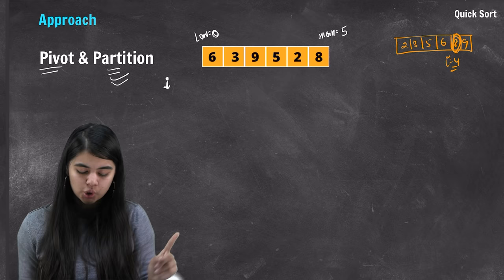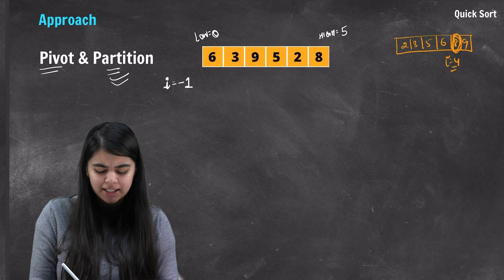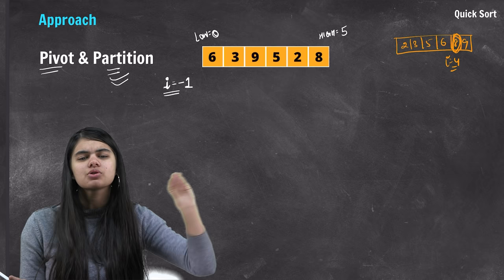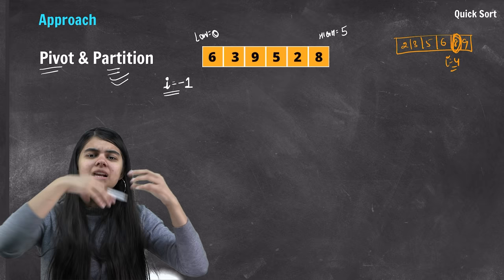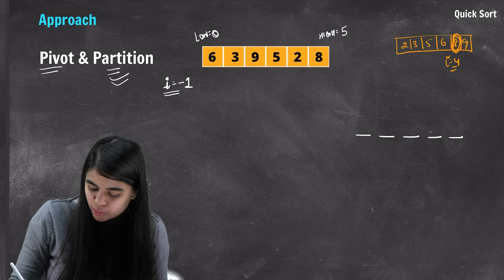Variable i will be initialized to low minus 1 — in our case, minus 1. If there is an element that is small relative to another element, i will track its position. Now we will traverse all elements and compare each element to the pivot. We have an array with 6 elements: 6, 3, 9, 5, 2, 8.